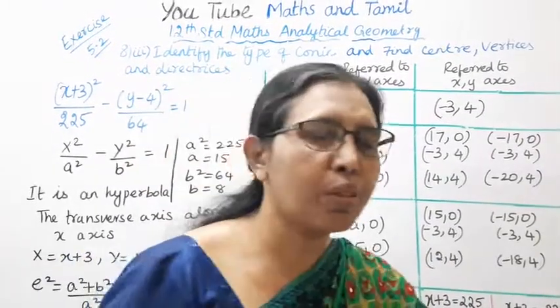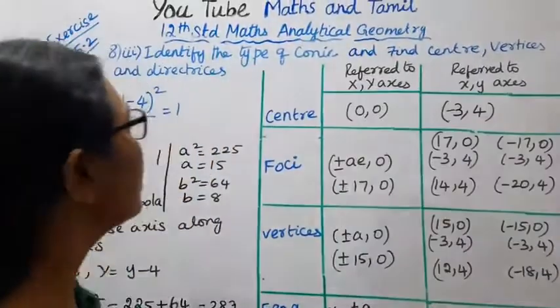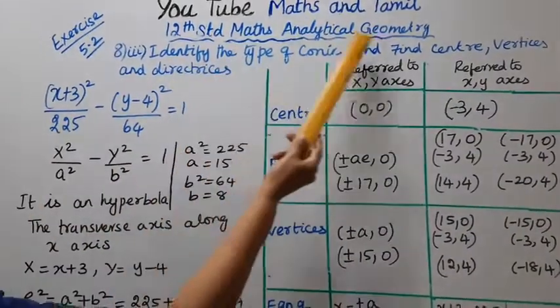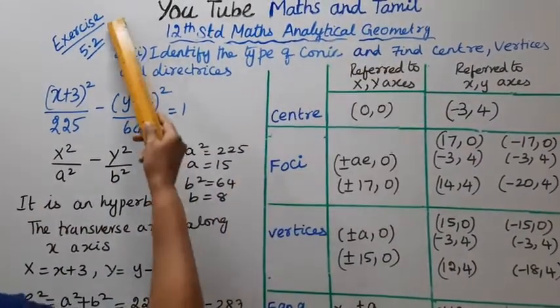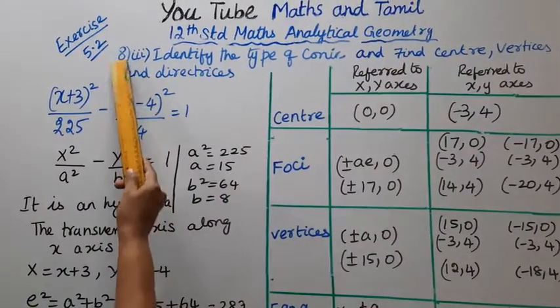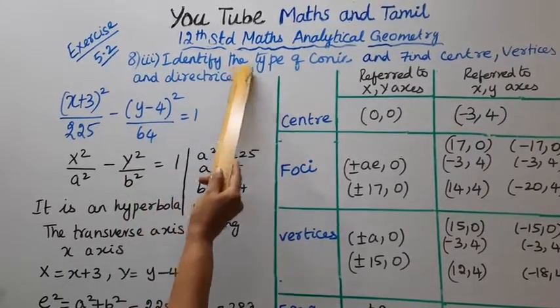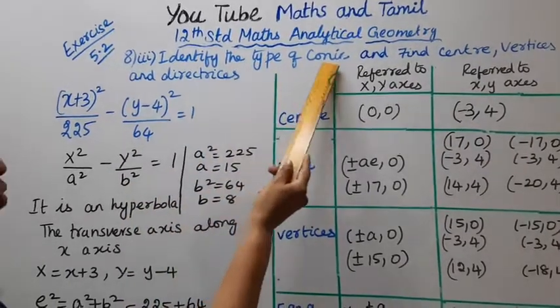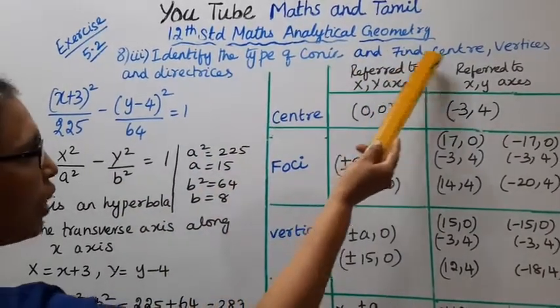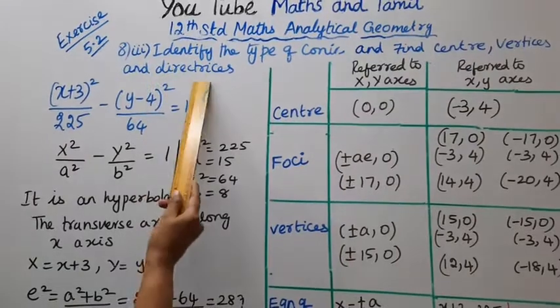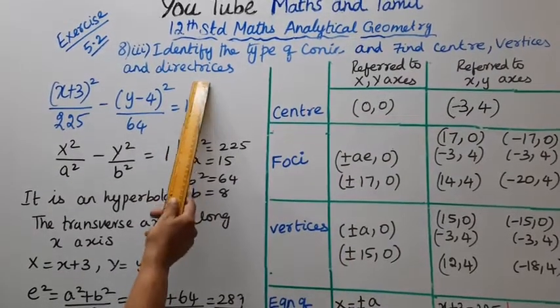Hello students, welcome to Max and Tramil channel. Analytical Geometry Exercise 5.2A, 3rd subdivision: Identify the type of conic and find center, vertices, and directrices.